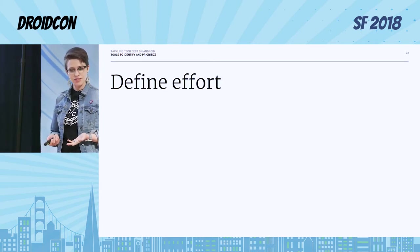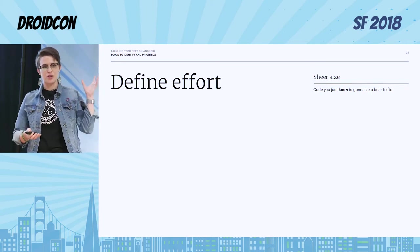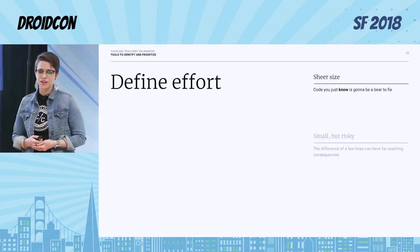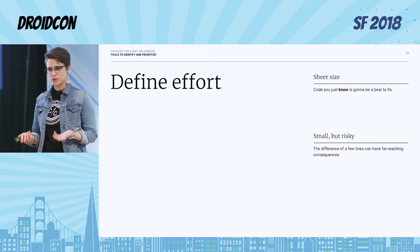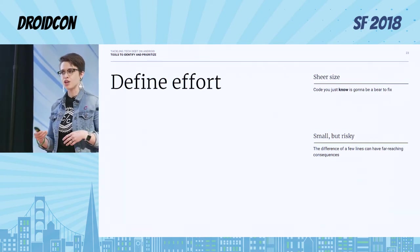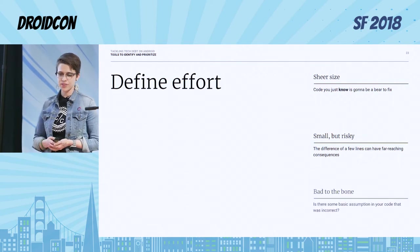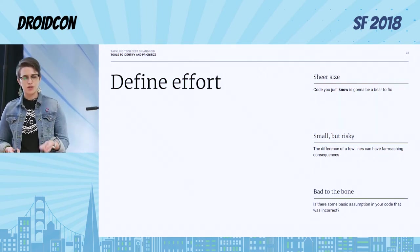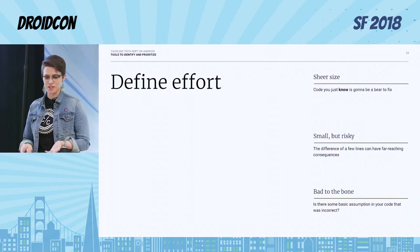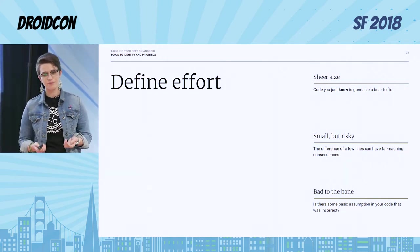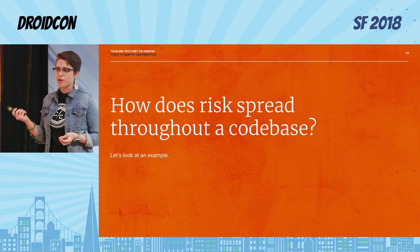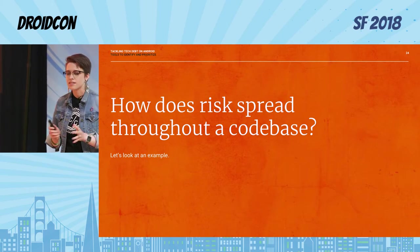The other axis is effort. If you know you have a big chunk of code and it's going to be a bear to fix, that's a lot of effort. But there's also code where you just need to change a few lines, but they can have far-reaching consequences — that actually increases the amount of effort because you don't know what the changes are going to bring. And is there some basic assumption in your code that was incorrect? Like Doze mode isn't a thing — that's a basic assumption that's now wrong and you have to go back and fix all those places where you assumed the app could do whatever it wants all the time.